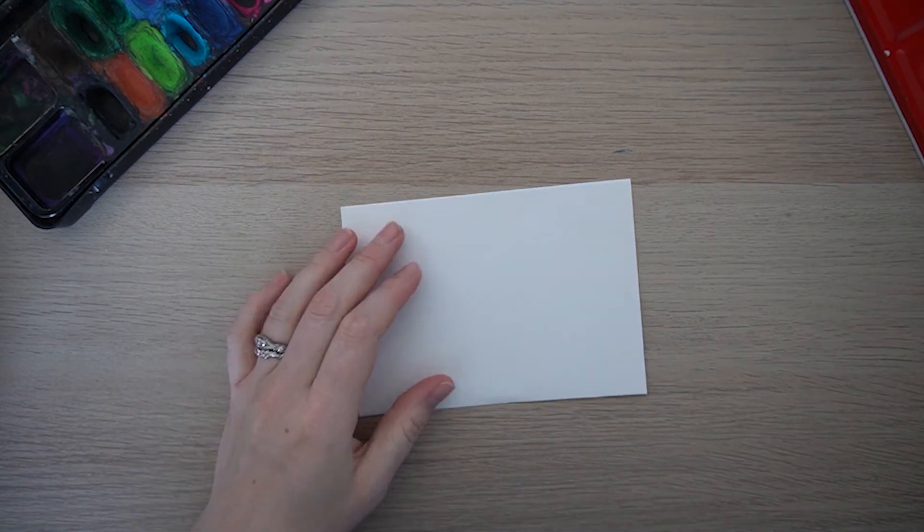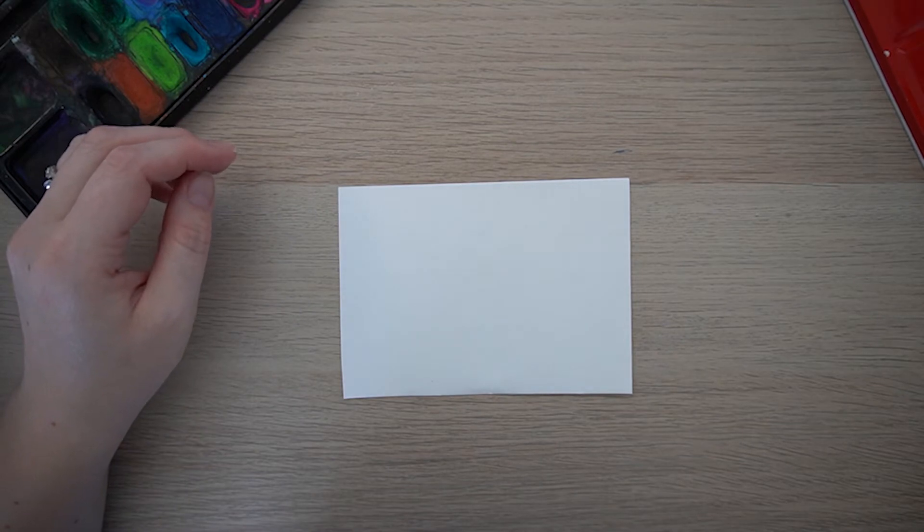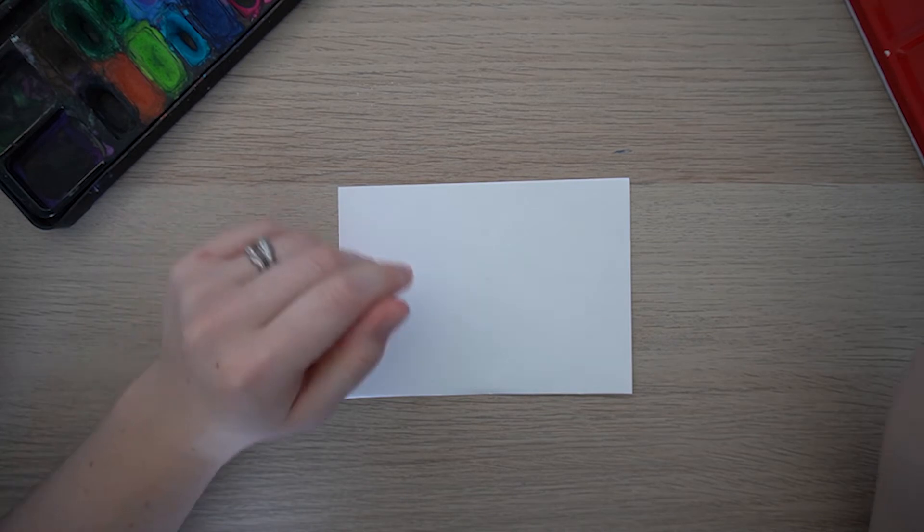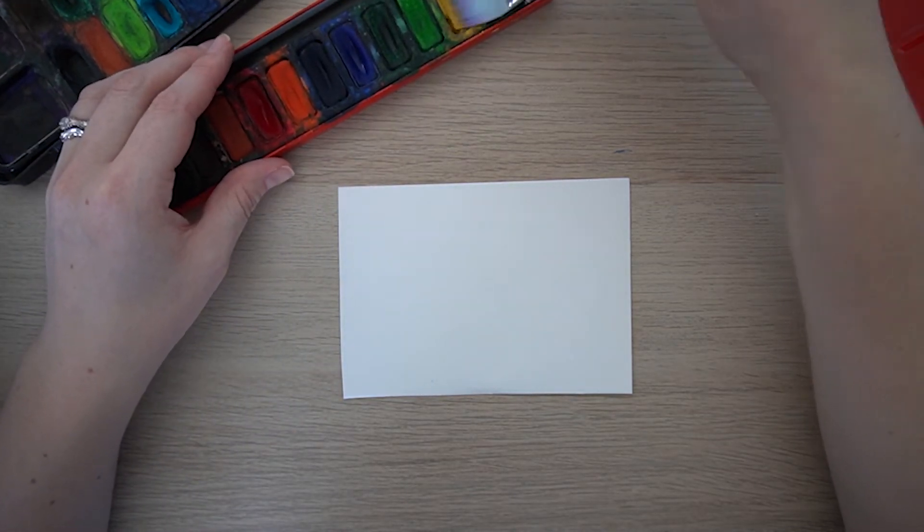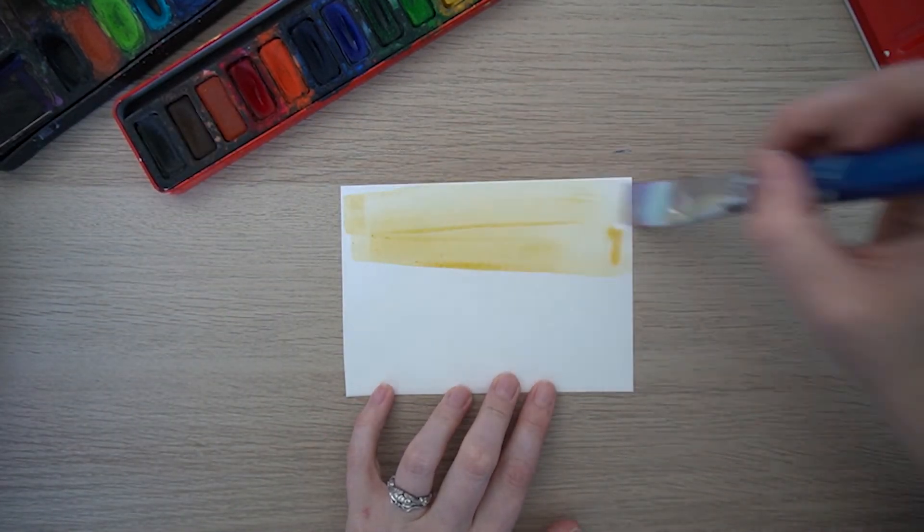So this one's fairly simple so you're just using your square edge brush is the easiest one because it doesn't leave as many brush marks. I'm just going to squeeze off the extra water and I am going to go for a subtler color this time with the yellow ochre.